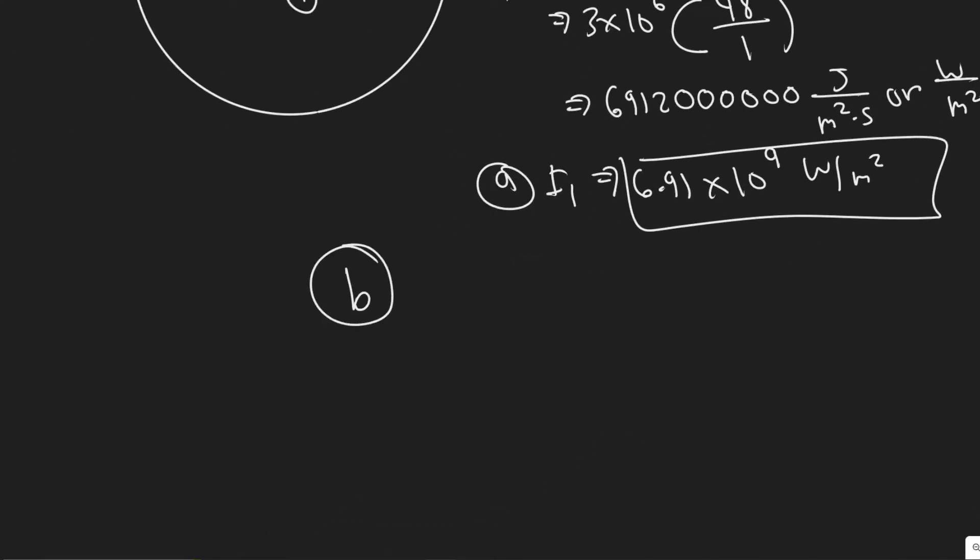Now let's go ahead and move on to B. So for B, what are they asking us to find? So they're asking us to find at what rate did the energy pass through an area at 1 kilometer? So that's what they're wanting us to solve for here.